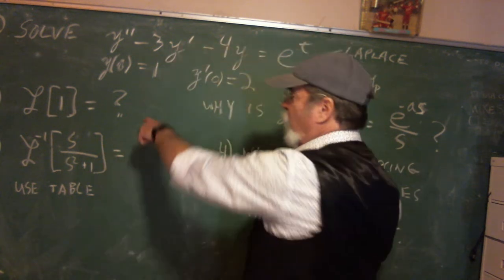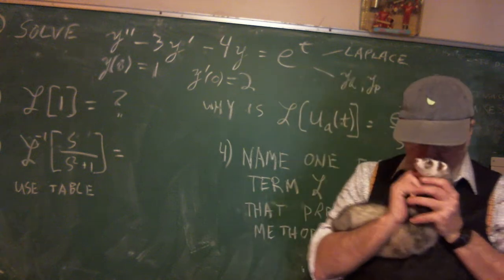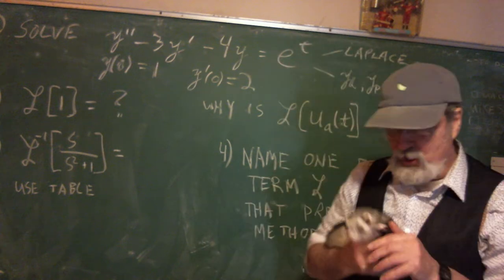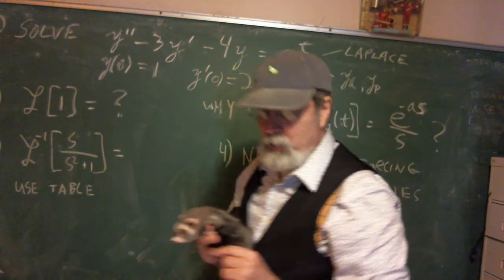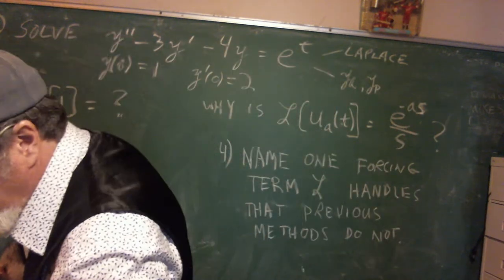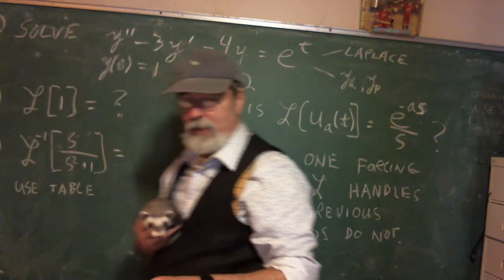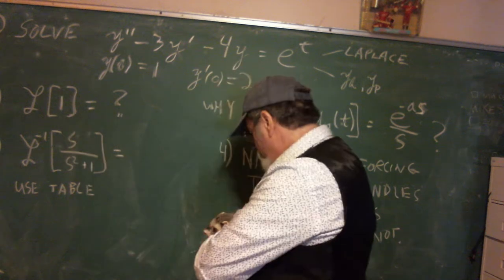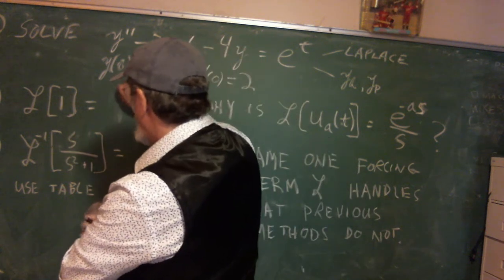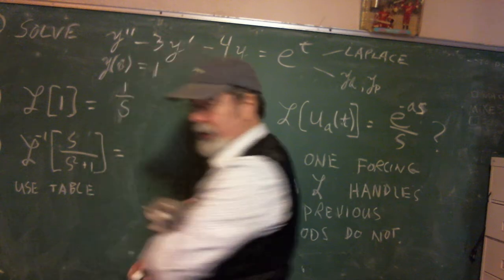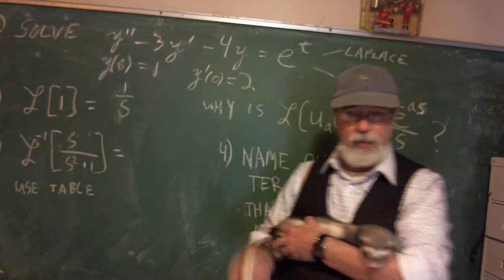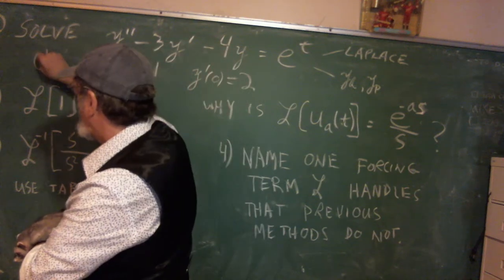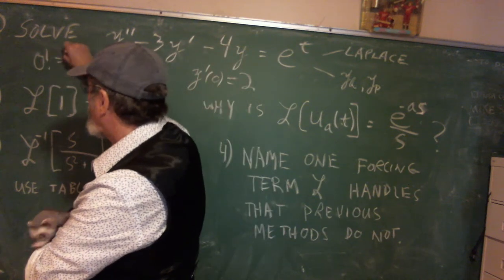What's the Laplace transform of one? Coco says just use the table. So we use the table and the formula says Laplace transform of T to the N. This would be T to the zero, and that turns out to be one over S because it's S to the N plus one and N would be zero. This one comes from zero factorial on the table, and zero factorial is one.